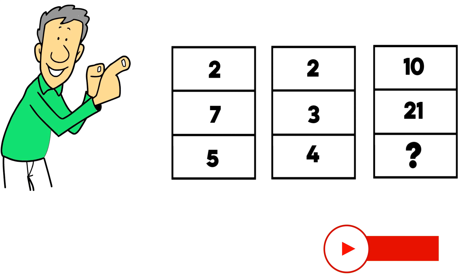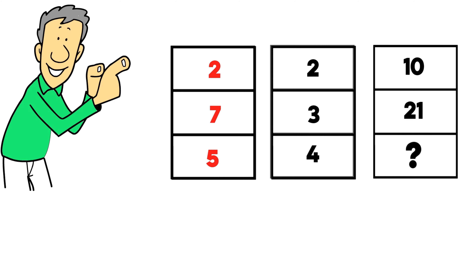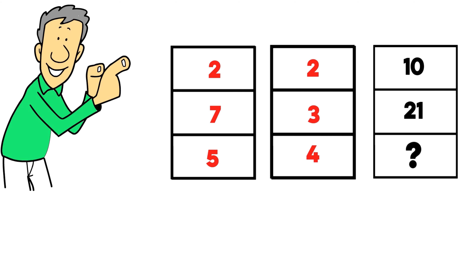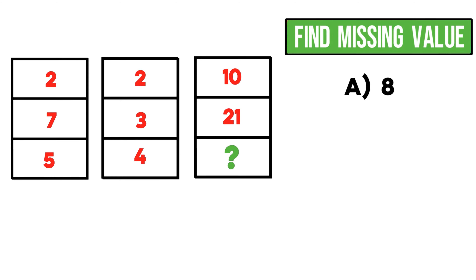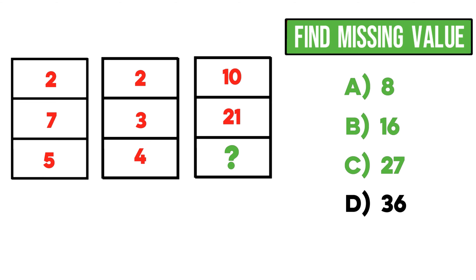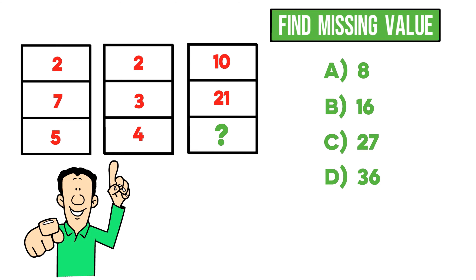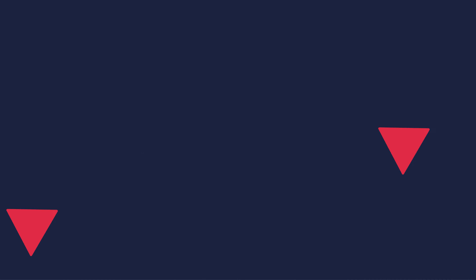Here is a question that tests your pattern recognition skills. You are presented with three columns, each containing three numbers. Column 1 has 2, 7, 5. Column 2 has 2, 3, and 4. Column 3 has 10, 21, and one missing number marked by a question mark. You need to find the missing value, with four choices: A — 8, B — 16, C — 27, and D — 36. Give yourself 5 to 10 seconds.